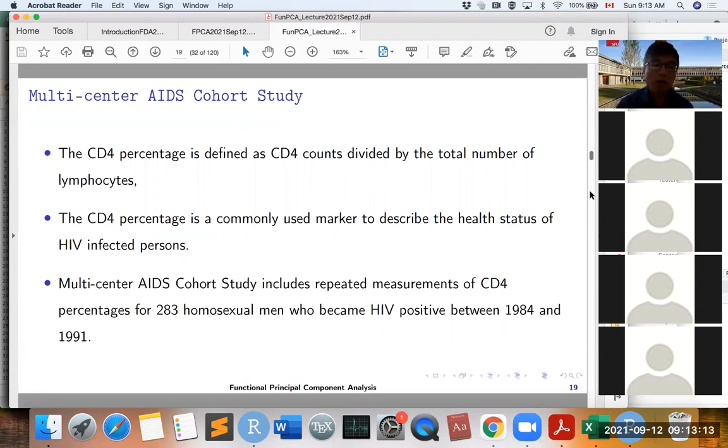So this is one example. This is the famous AIDS cohort study. Basically they recorded the CD4 percentage for 283 homosexual men who became HIV positive between the year 1984 to 1991.